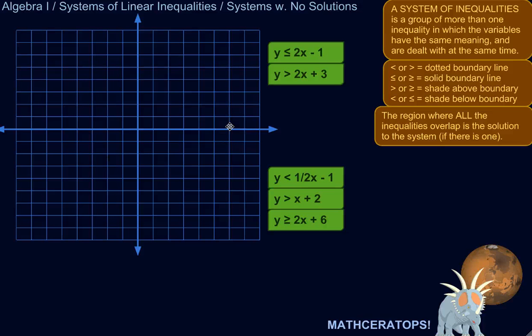All right, let me show you a couple of situations in which there would be no solution to a system of linear inequalities. When you're graphing these things, that's a way of figuring out the solution set and where they overlap, that's where the solution set is. But what if they don't overlap?